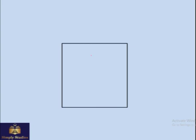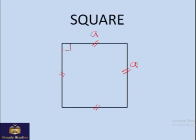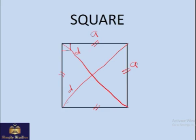Now if we have a rectangle but all the sides are equal, with 90-degree angles as before, what we have now is called a square. In case of a square, there is a diagonal, and the diagonals are again the same. The area of a square is simply A squared, because it's this side times this side.